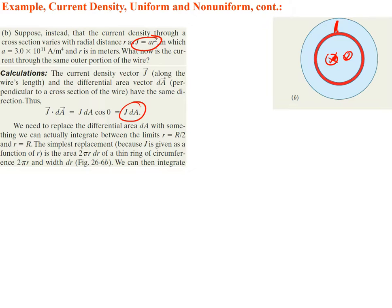Now suppose the current density through the cross-section varies with radial distance r, where J = ar². A is given as a constant: 3.0 × 10¹¹ amps per meter to the fourth — meters to the fourth because you're multiplying by r², so the overall units work out to amps per meter squared. What is the current through the same outer portion of the cross-section?